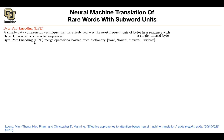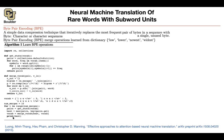Let me introduce the algorithm using an example. Maybe this is your dataset, your dictionary. In your dictionary you have: low, lower, newest, and widest. You want to process that dictionary and come up with your byte-pair encoding sequences. This is the algorithm — it's a good exercise. You can just copy and paste that algorithm in Python and run it, and it's going to give you byte-pair encoding. It's very simple, beautiful, and elegant.